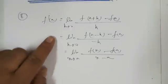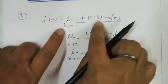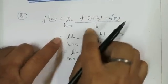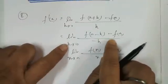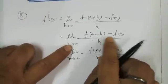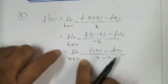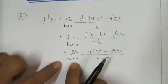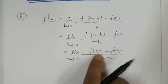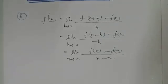f'(a) is the limit of [f(a+h) - f(a)] / h when h tends to 0. This is also equal to the left-hand limit of [f(a-h) - f(a)] / (-h) when h tends to 0. This can also be written as [f(x) - f(a)] / (x - a) when x tends to a.